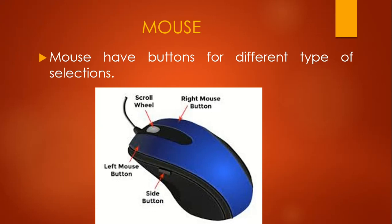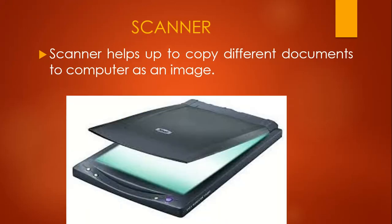It has a scroll wheel in the middle. With the help of this scroll wheel, we can move up and down a page. To choose an icon, we place the pointer at that icon and click the left side button of the mouse.